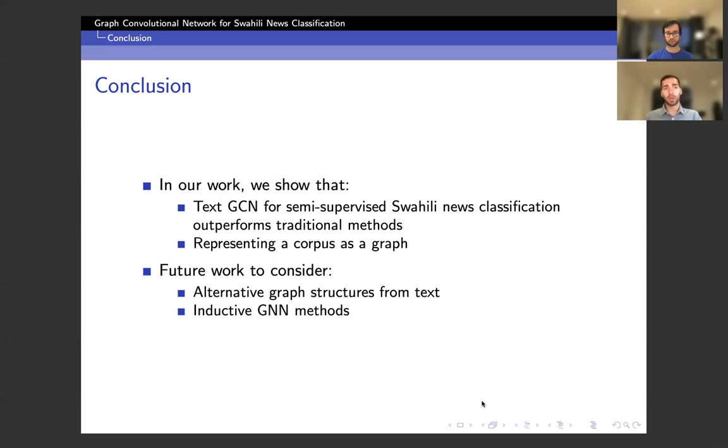So for future work, alternative graph structures could be considered. For example, a document-to-document similarity feature could be added to the graph. And additionally, inductive GNN methods could be considered in which previously unseen nodes can be classified in testing.